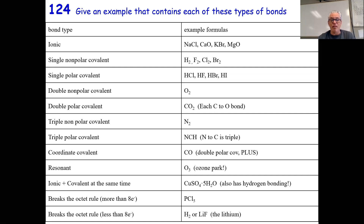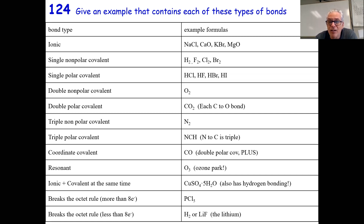A resonating bond goes back and forth — it's a hybrid, not normal. You draw it in two pictures: first like this, then like that, back and forth. Sometimes you can have multiple different kinds of bonds in the same compound — ionic and covalent at the same time. Copper(II) sulfate pentahydrate has the copper ion bonding to the sulfate anion with an ionic bond, the sulfur and oxygen making polar covalent bonds, and the water molecules attached via hydrogen bonding. So there's ionic, covalent, and hydrogen bonding all in one.